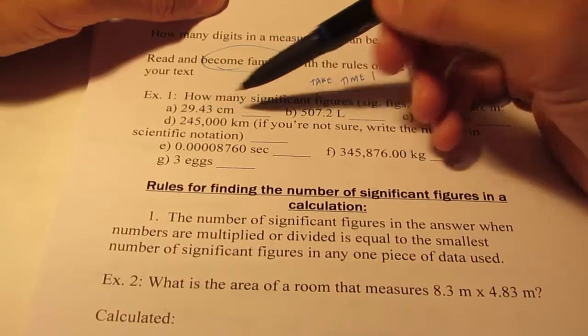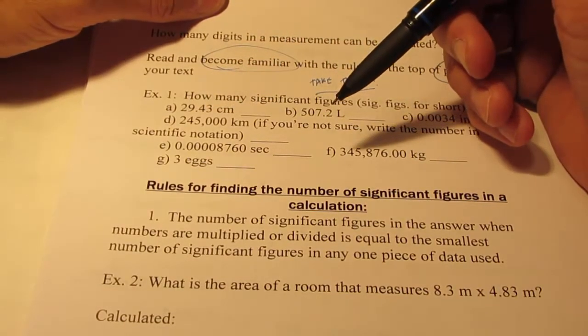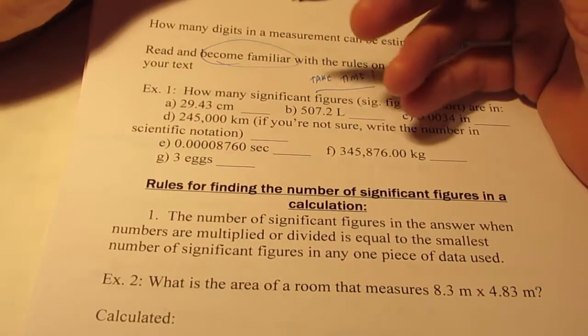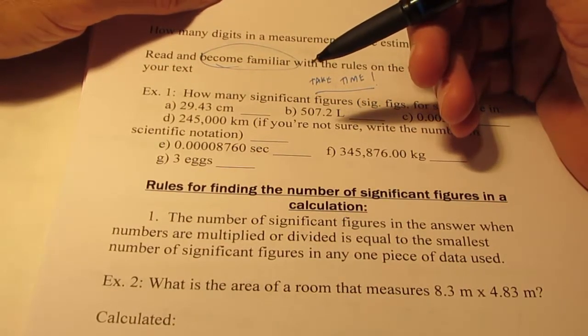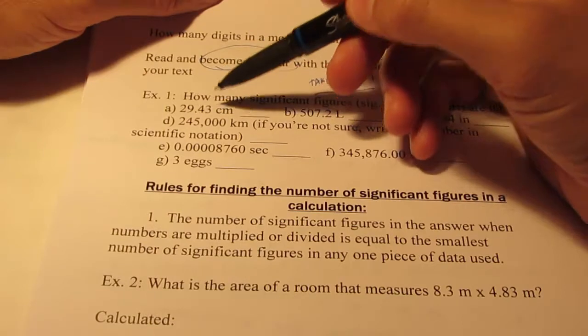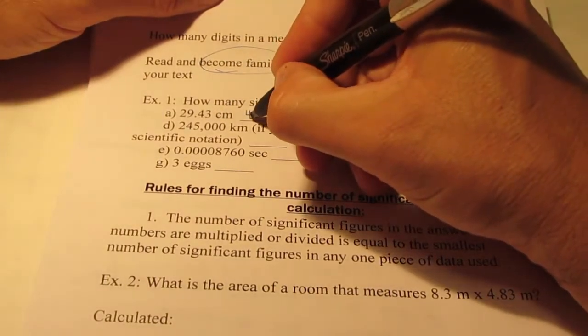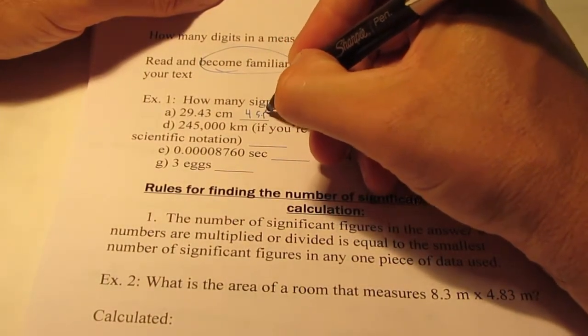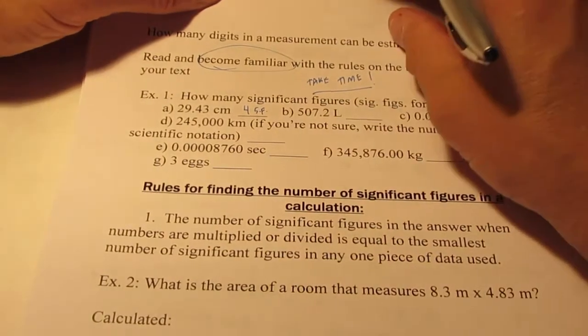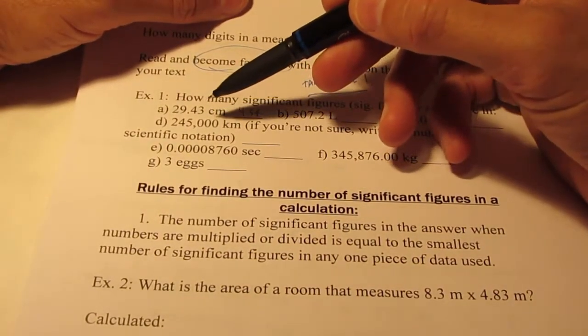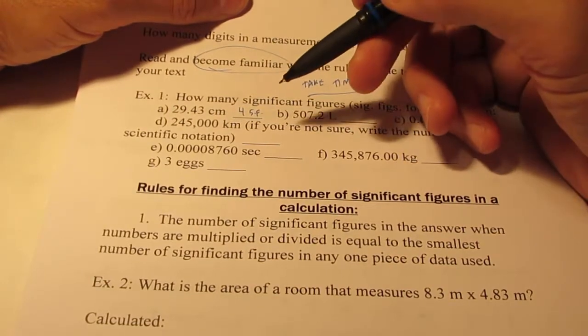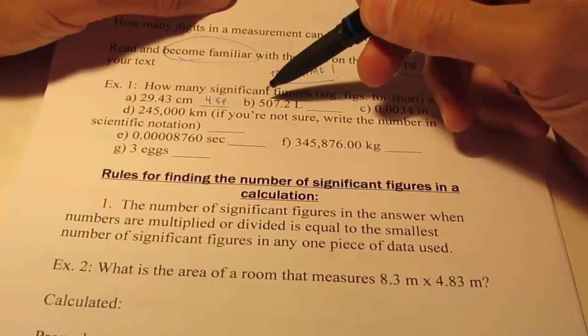So letter A, 29.43 centimeters. Well, it turns out that all non-zero digits in the measurement are considered to be significant. So this one's pretty easy. We would say four significant figures because there are no zeroes in there. If you remember, as we went over our rules, the only digits we really questioned were those that had zeroes in them.